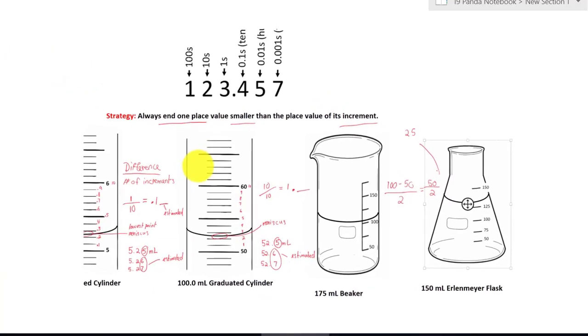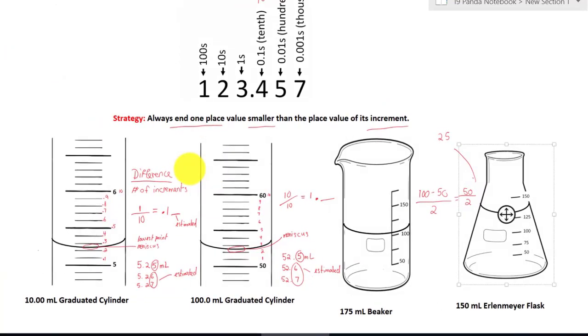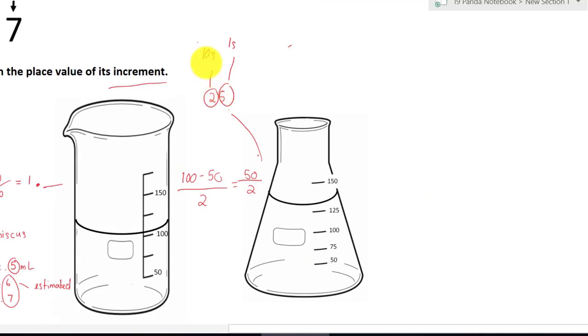Now let's go back to our strategy. Always end one place value smaller than the place value of its increment. Our increment is 25, so it's the tens place. And what is smaller than the tens, the ones. So this is where we're going to estimate. So before we do the reading, we have to go back and label the missing measurements. So 50 plus 25 will give us 75.